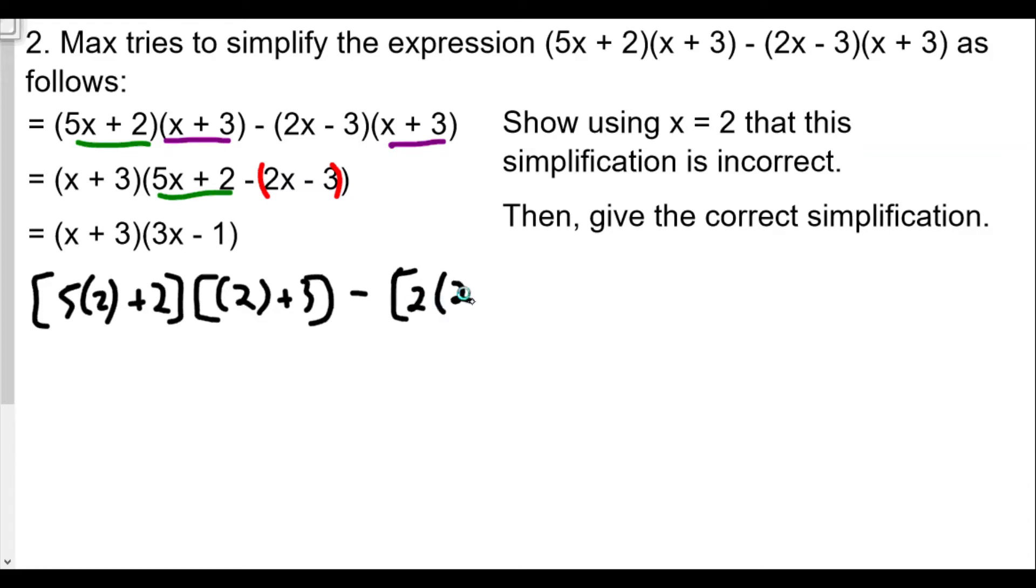5 times 2 is 10 plus 2 is 12, and 2 plus 3 is 5, so it's 5 here. Now 2 times 2 is 4 minus 3 is equal to 1, and then 2 plus 3 is equal to 5.